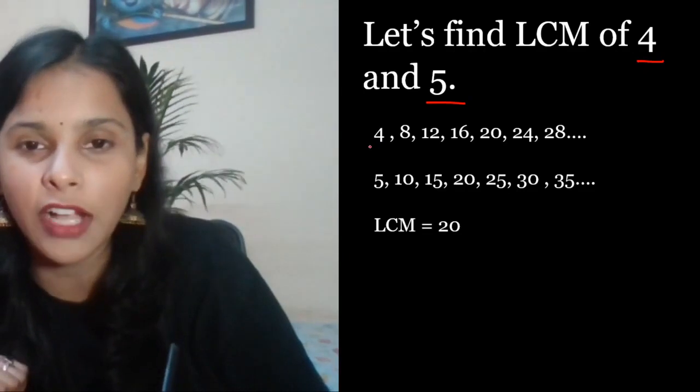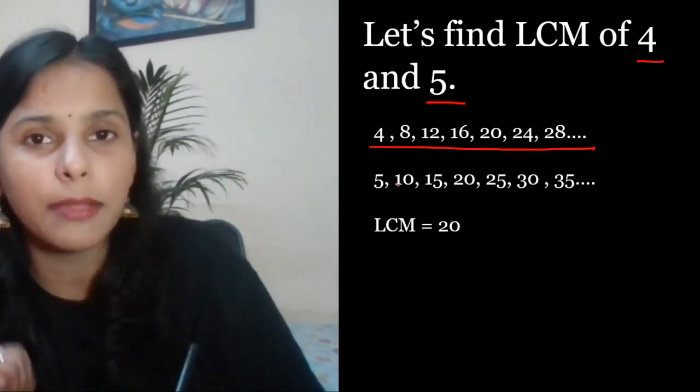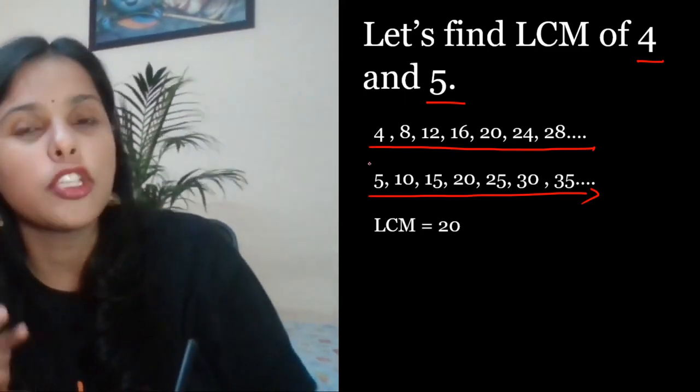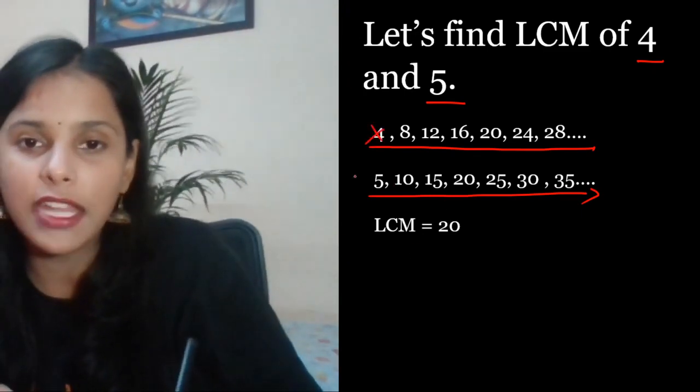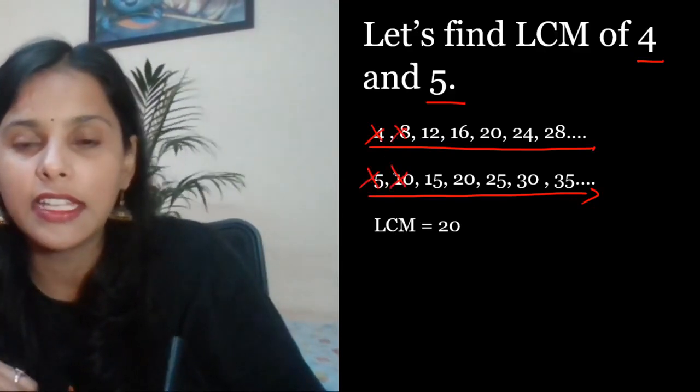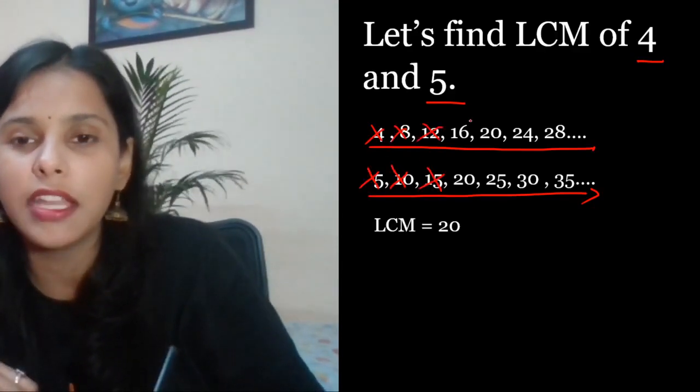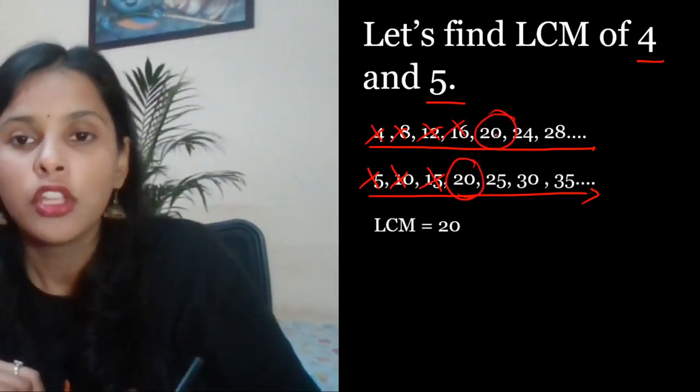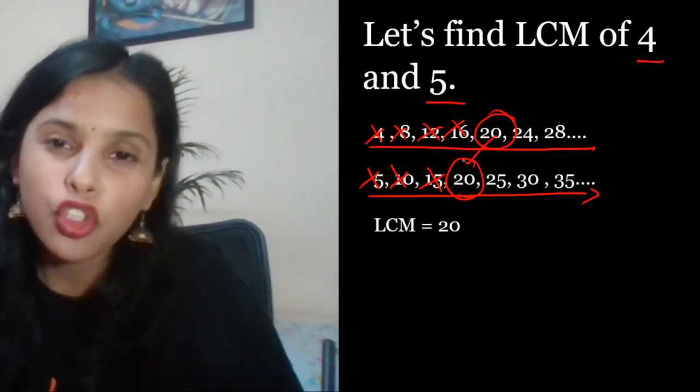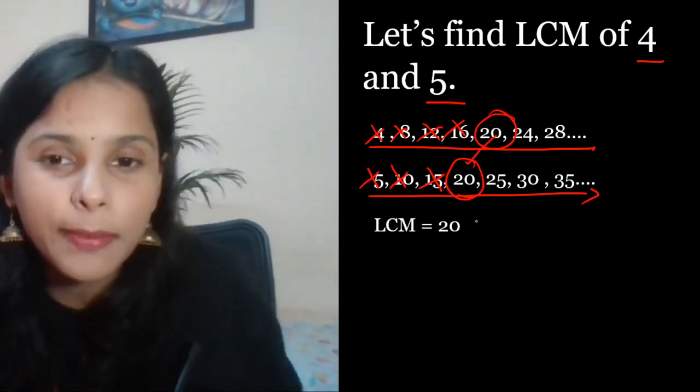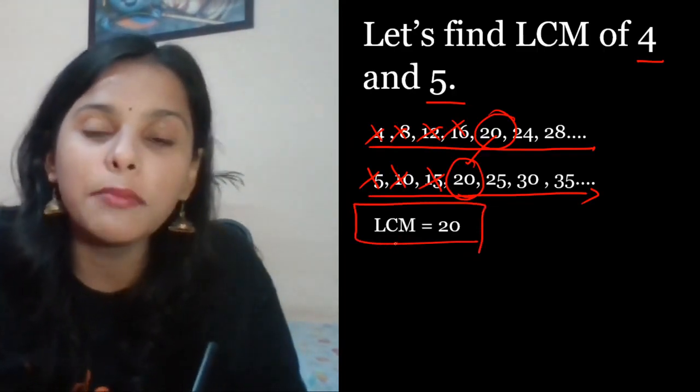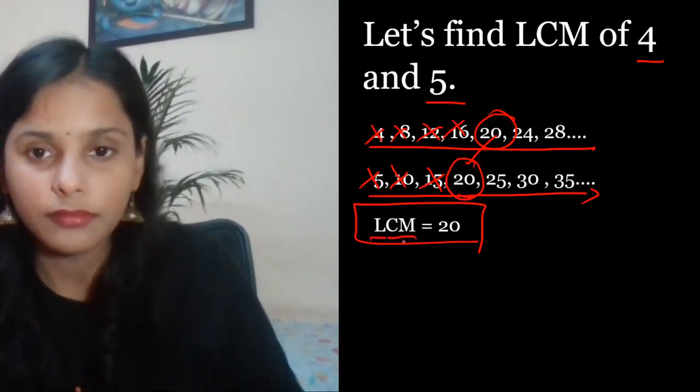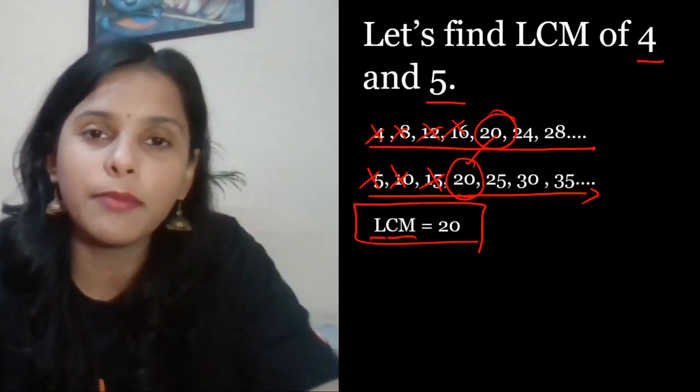Toh ab isko semajta hai ek example se. Lye leta hai example 4 or 5 ka. Toh yeh ligh di hai haem ne 4 ke multiple, 4 ke table. Yeh ligh di hai haem ne 5 ke multiple. Ab ismei ndo hon sabse chhota common multiple kya hai. Toh 5 nahi hai, 4 nahi hai, 8 nahi hai, 10 nahi hai, 12 nahi hai, 15 nahi hai common, 16 nahi hai. 20 mil raha hai common dono me hai. Toh sabse chhota common multiple koon sa ho gya? 20. Or that is nothing but the least common multiple, or you can say the lowest common multiple. Yehi hai meri bacho LCM ka concept.